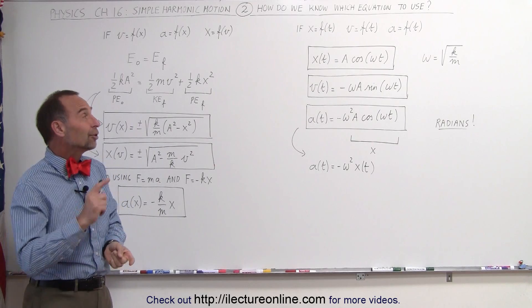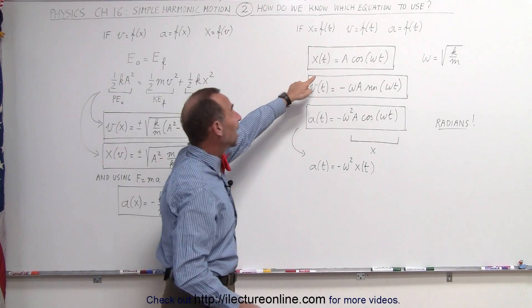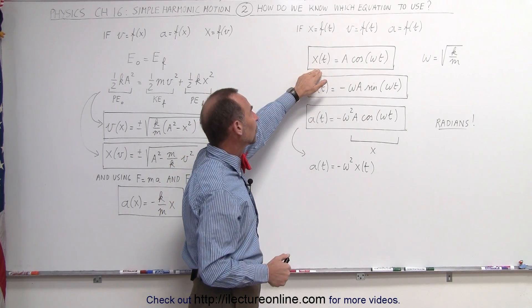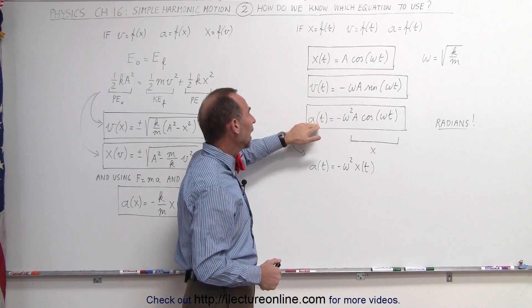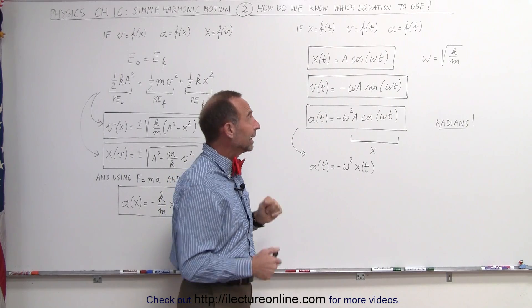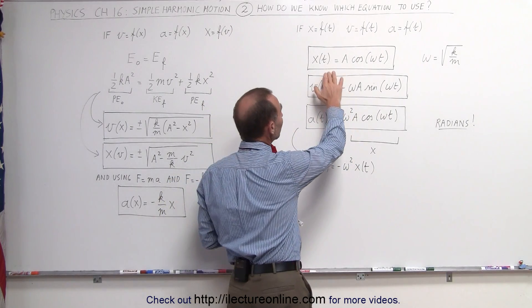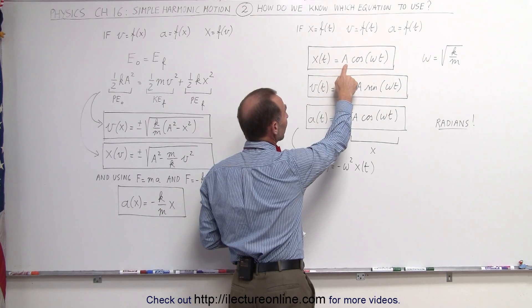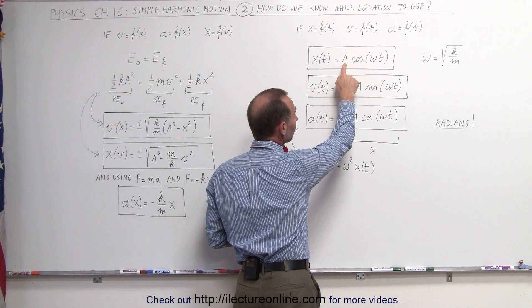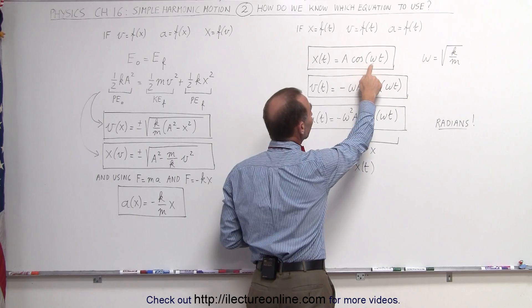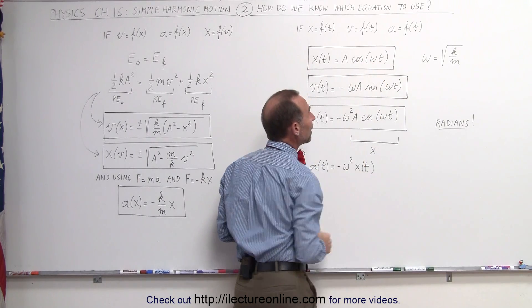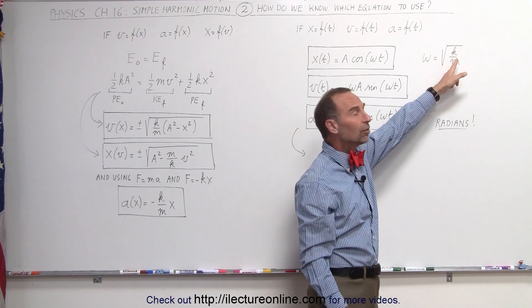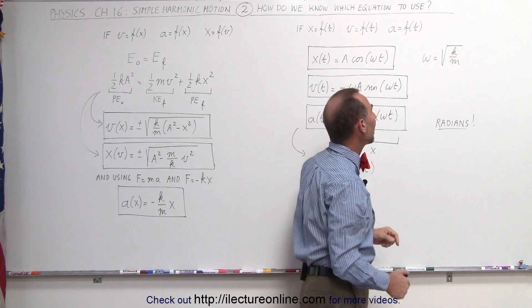But sometimes they give you the position in terms of time. For example, they'll say two seconds after the motion started, where will the object be, how fast is it moving, and what will be the acceleration. In that case, we start with the basic equation that the position, as a function of time, can be written as the magnitude of its oscillation times the cosine of omega times t. Remember that omega is defined as the square root of k divided by m, k being the spring constant, and m being the mass of the object.